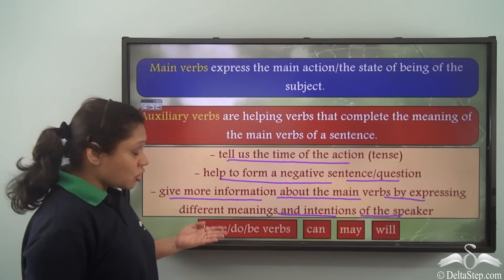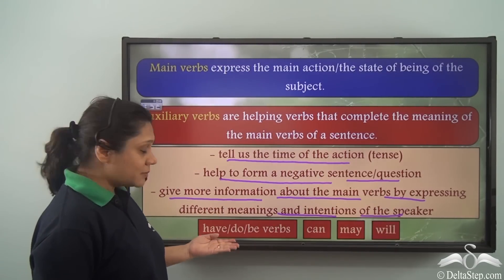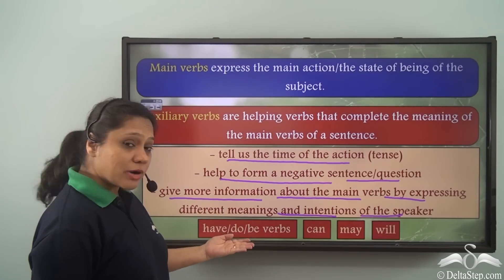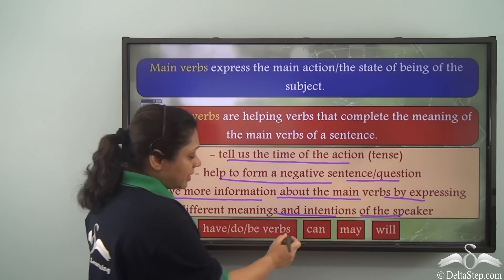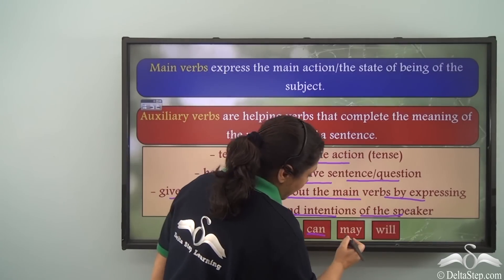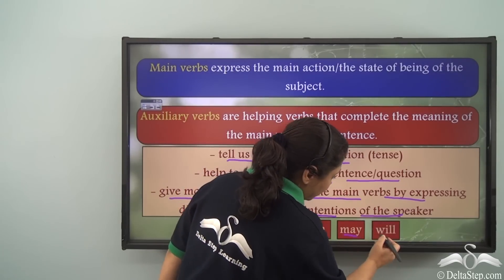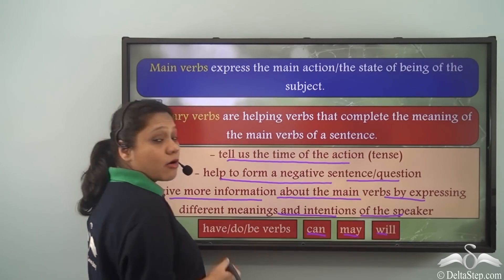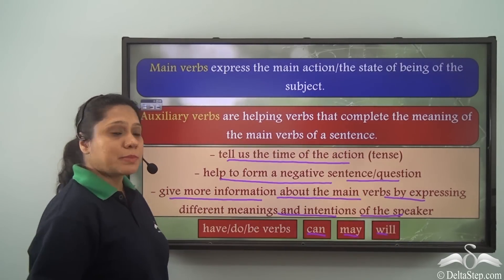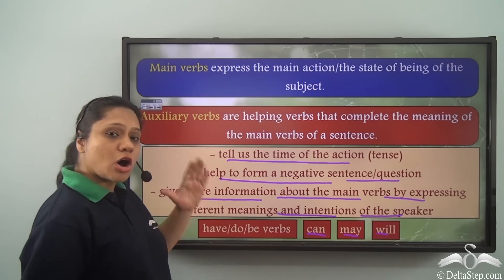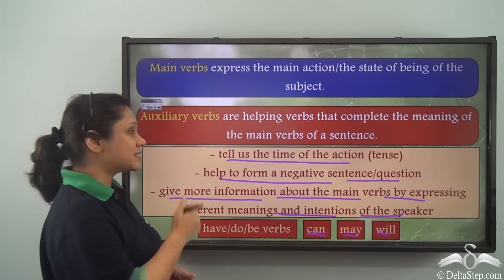Have verbs, do verbs, be verbs, can, may, and will are all examples of auxiliary verbs.